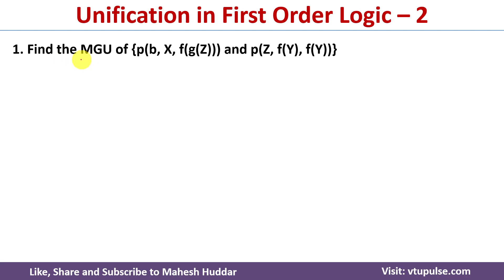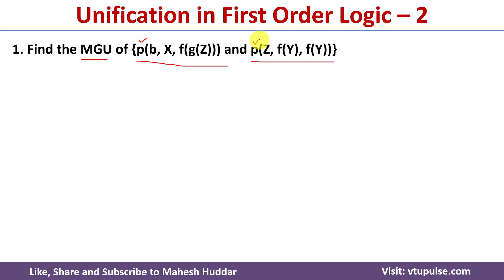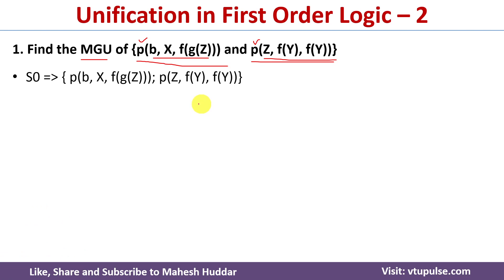In the first example we need to find the most general unifier for the given two expressions. The two expressions are: p(b, x, f(g(z))) and p(z, f(y), f(y)). Between these two we need to perform the unification and find the most general unifier. First we check whether the predicate symbol is the same — it is p in both cases — and the number of arguments is 3 in both cases, so we can perform the unification.